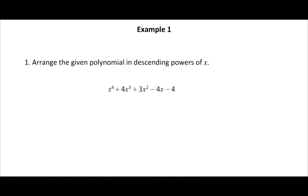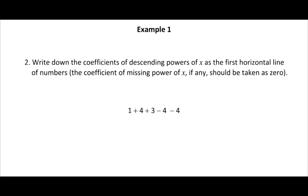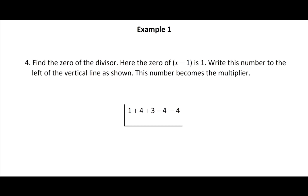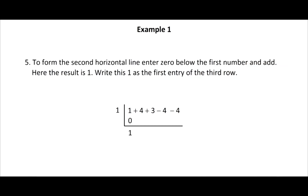Arrange the given polynomial in descending powers of x. Write down the coefficients of the descending powers of x as the first horizontal line of numbers. The coefficient of any missing power of x should be taken as zero. Draw the horizontal and vertical lines. Find the zero of the divisor — here the zero of x minus 1 is 1. Write this number to the left of the vertical line; this becomes the multiplier. Enter zero below the first coefficient and add — the result is 1.